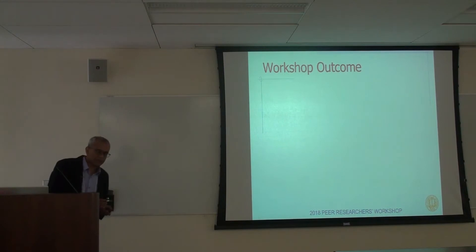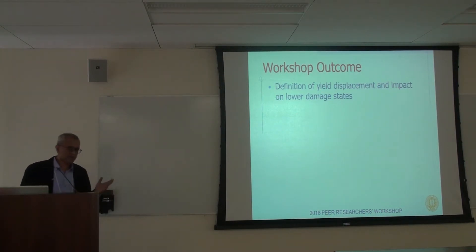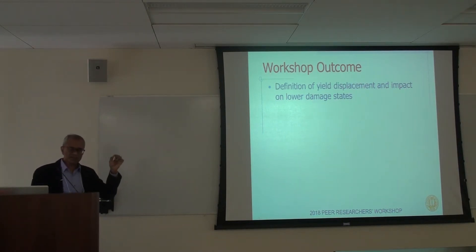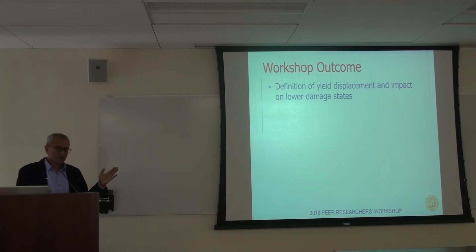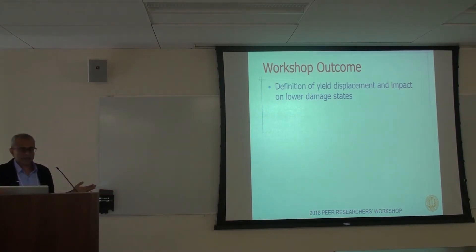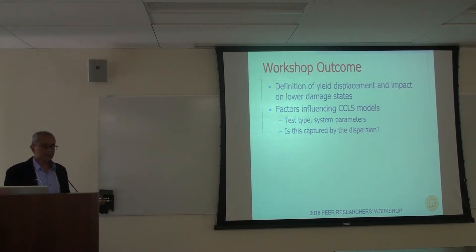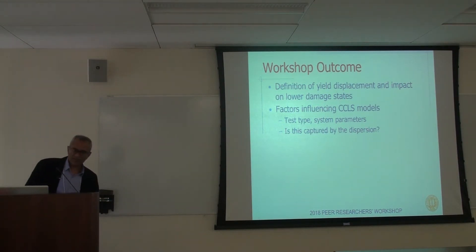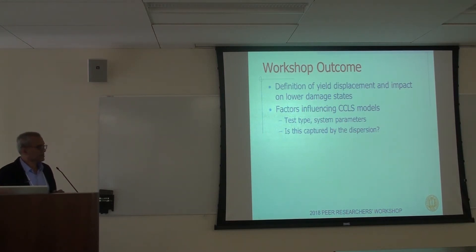Some of the things the panelists discussed included the definition of the yield displacement — obviously if you use ductility as a measure, where you place that yield displacement can produce fairly different ductility values, particularly its impact on the lower damage states. If you pick a fairly low yield displacement value, you would start to see much more damage occurring earlier than in the real experiment. They also discussed what factors affected these models — such as the type of test and system parameters — and whether the observed dispersion adequately captured those variations.